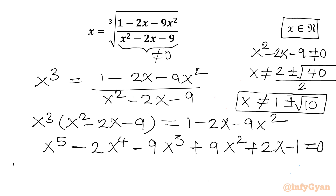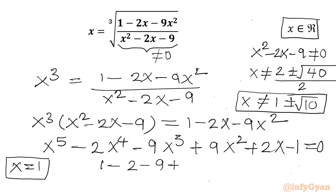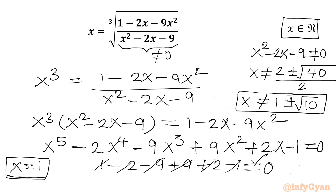Now if I plug in x = 1: 1 minus 2 minus 9 plus 9 plus 2 minus 1 = 0. So x = 1 satisfies the equation. That means x = 1 is our first real solution.